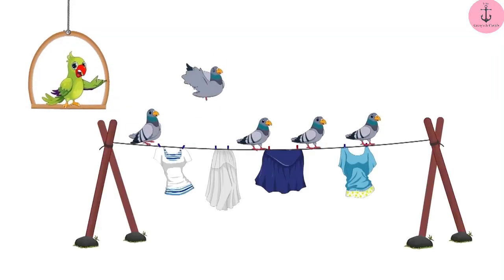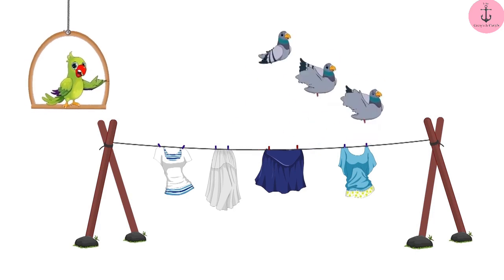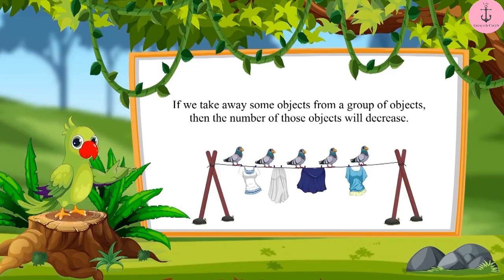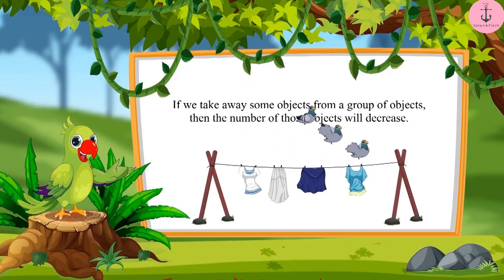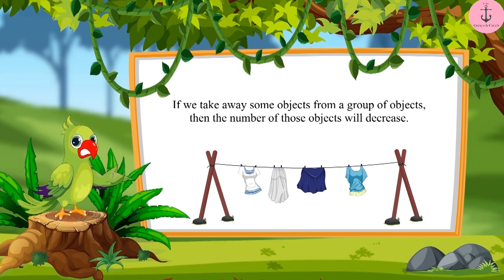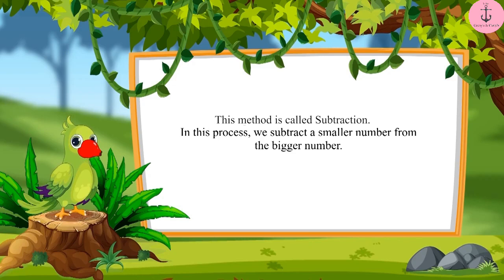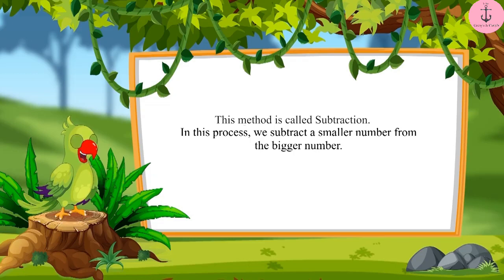So, children, you saw how the number of pigeons kept on decreasing. In this way, if we take away some objects from a group of objects, then the number of that object decreases. Do you know what this method is called? This method is called subtraction. In this process, we generally subtract a smaller number from the bigger number.